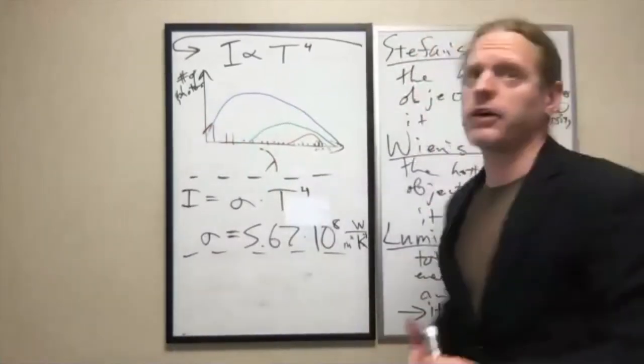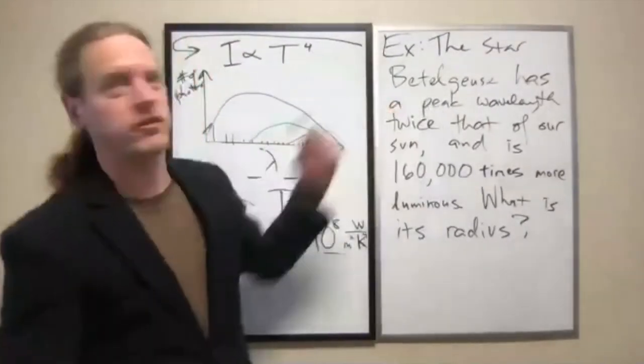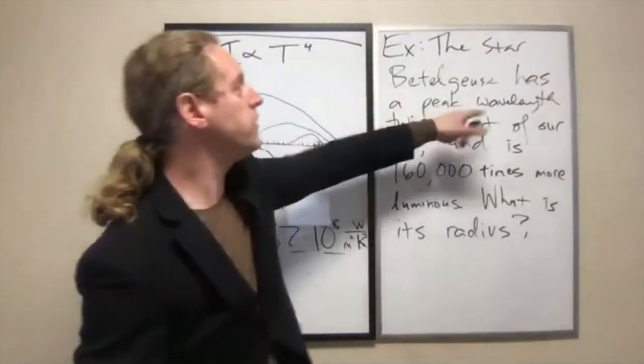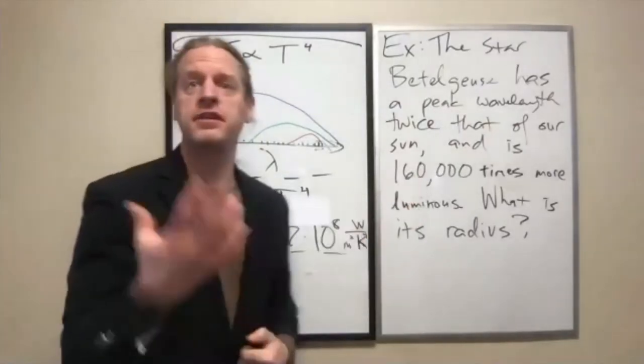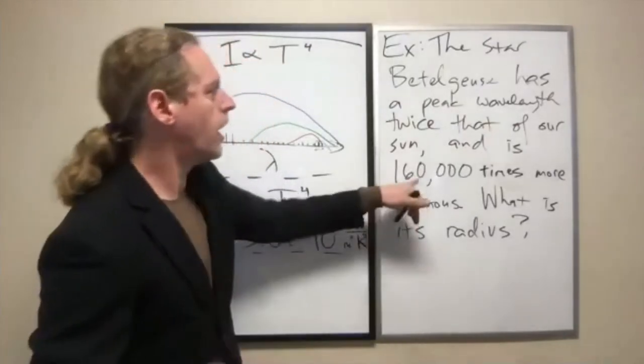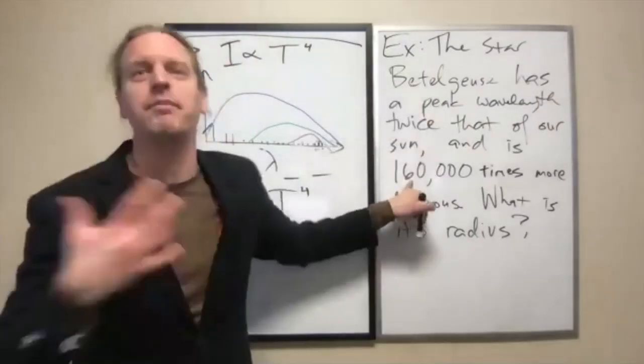So let me write this out here, and this can be an example that we're going to solve. So again, just to repeat, Betelgeuse, the way I wrote it, it has twice the peak wavelength of our sun and 160,000 times more luminosity. It is kind of assumed that we've used this value to calculate that, by the way.